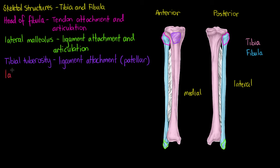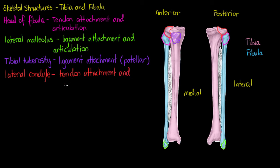The next feature we're going to see is our lateral condyle, which is on the outer surface of the tibia — not on the medial side toward the middle of the body. I'll show you on the posterior as well. It's going to be a point of articulation and also a point of tendon attachment. Our tibia articulates with our femur to form our knee joint, and the condyles of the tibia are where that happens.